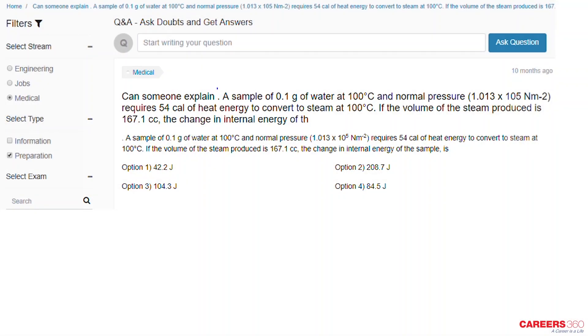Welcome to Career360. The question for discussion is: A sample of 0.1 gram of water at 100°C and normal pressure requires 54 calories of heat energy to convert to steam at 100°C. If the volume of the steam produced is 167.1 cc, find the change in internal energy of the sample.